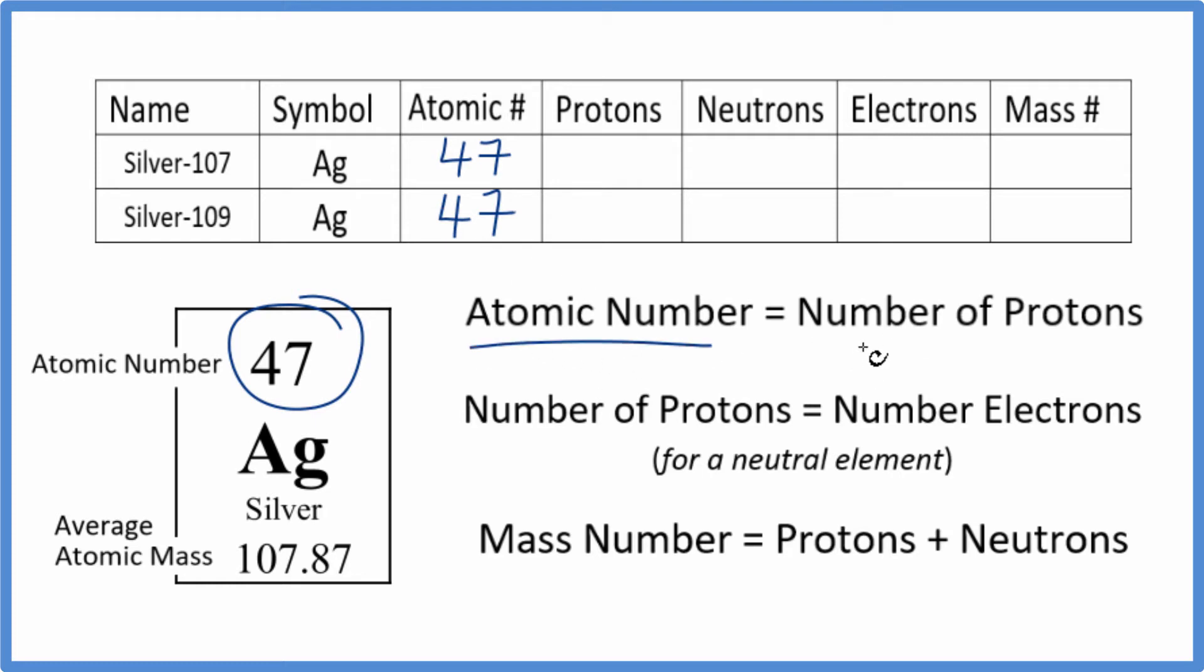The atomic number, by definition, is the number of protons. So silver has 47 protons.